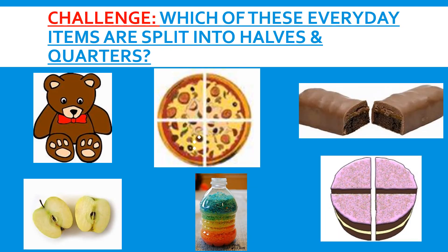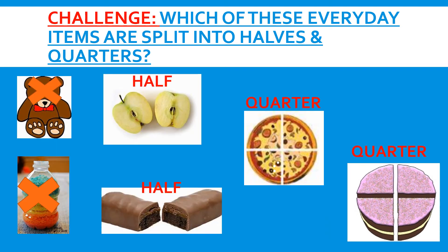Okay, here's your challenge. Can you see which of these everyday items are split into halves and quarters? Look carefully because not everything can be split into halves and quarters. The apple is split into half, the chocolate is split into half, the pizza is split into quarters, and the cake is split into quarters. The teddy and the bottle cannot be split into equal parts.